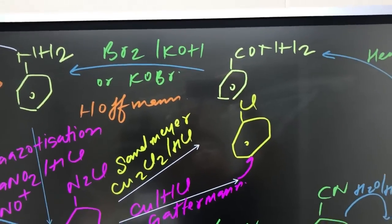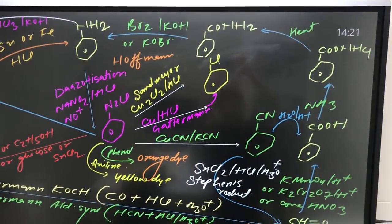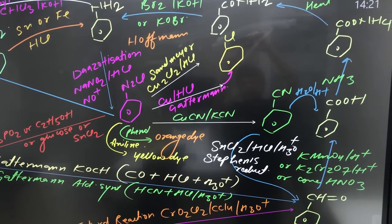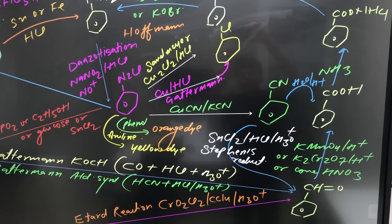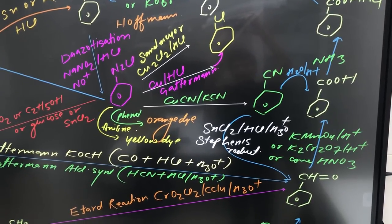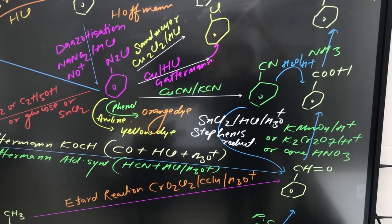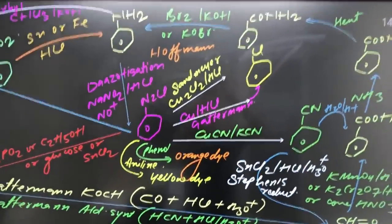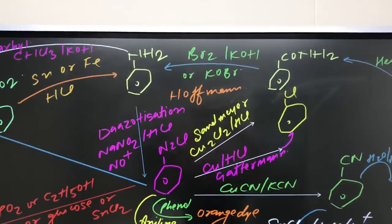Now benzamide on reaction with Br2/KOH, this is known as Hoffmann Bromamide Degradation Reaction. Br2/KOH means Br2 plus KOH gives KOBr, potassium hypobromite. And this reaction's name is Hoffmann Bromamide Degradation or Hoffmann Bromamide Rearrangement. There is shortening of the chain in this reaction. One degree amide converts into one degree amine with number of intermediates, but those intermediates I will let you know later on. So up to benzamide we have reached.